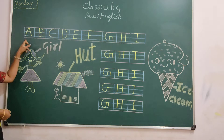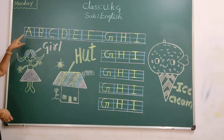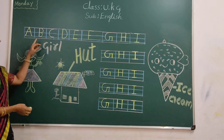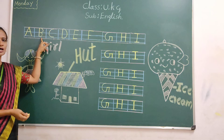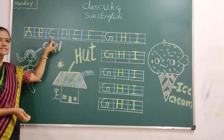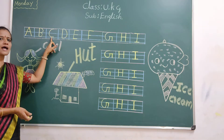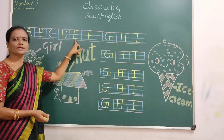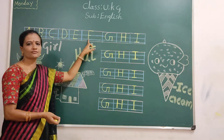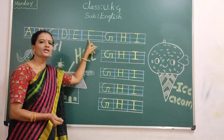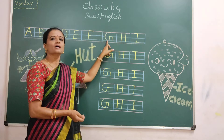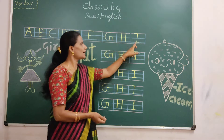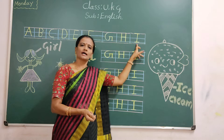So first, let us review all the words we learned, children. A — A for apple. B — B for ball. C — C for cat. D — D for doll. E — E for elephant. F — F for fish. G — G for girl. H — H for heart. I — I for ice cream.